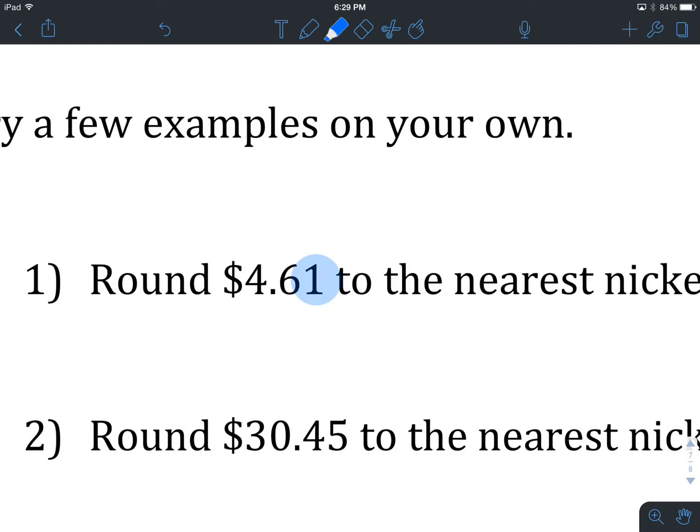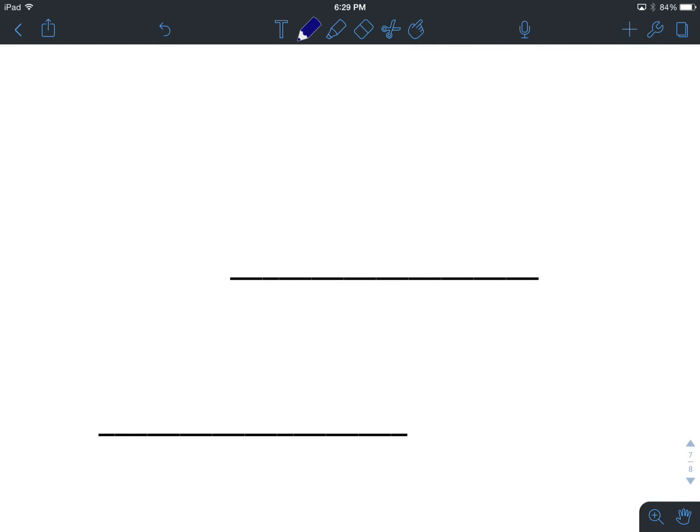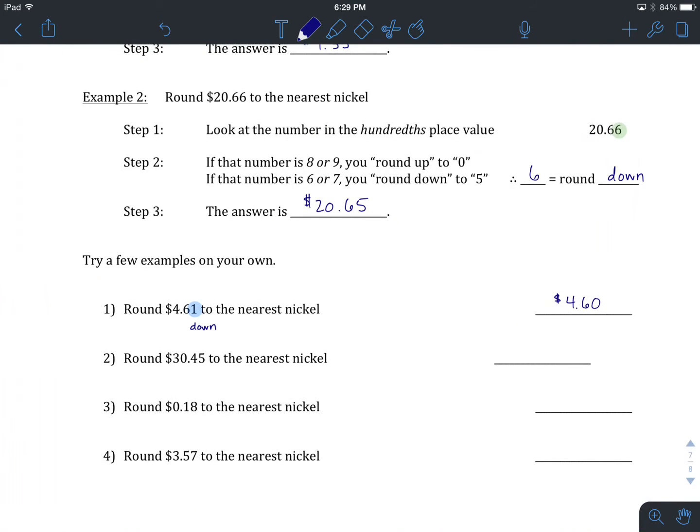So we are going to round down, which means that we are going to have $4.60. That's what the one tells me. At this point, I'd like you to hit pause in the video and take a crack at number two. See how you do. Come on back and we'll see what you did.